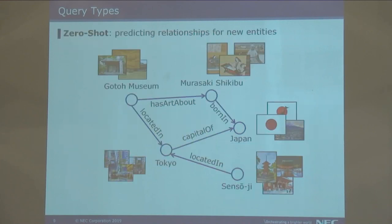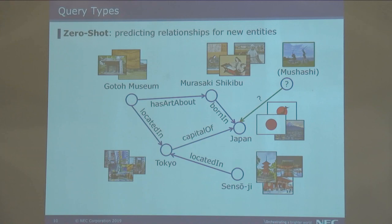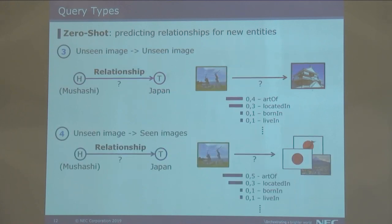Another interesting problem that can be solved with this type of visual knowledge graph — and normally cannot be solved with symbolic entities — is zero-shot learning. Given an image from an unseen entity, we want to know how it is related to our known entities. We consider two types of queries: given an unseen image from a known entity and an unseen image from an unseen entity to predict the result, or predicting how the unseen entity relates to known nodes in the graph.